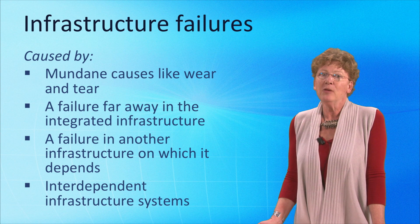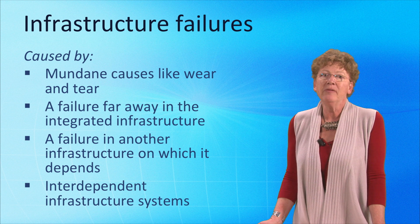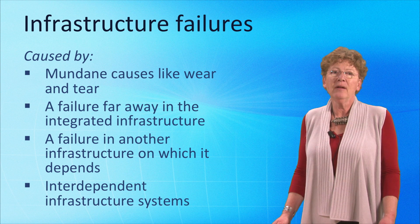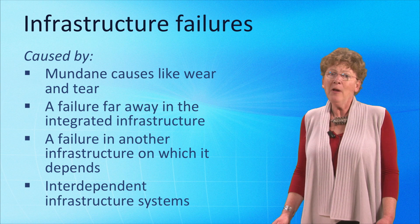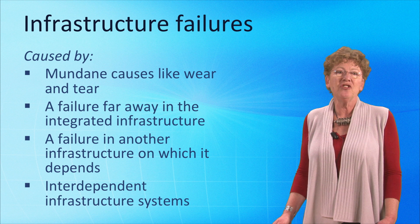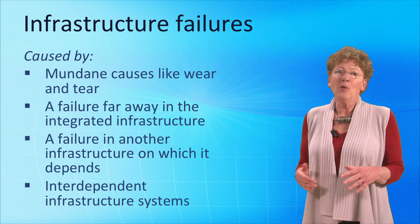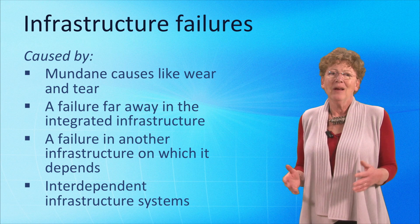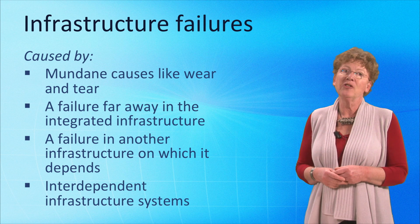To further complicate matters, failures may also originate from other infrastructure systems, because today's infrastructure systems are largely interdependent. Drinking water infrastructure needs electricity to power its pumps. Continental electricity infrastructure needs telecom and information infrastructure — without it, essential information on the state of the network cannot be shared between national transmission system operators. And the other way around, mobile telecommunication infrastructure critically depends on electricity. In other words, we are dealing with a system of interdependent infrastructure systems.